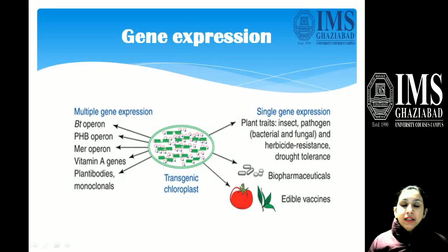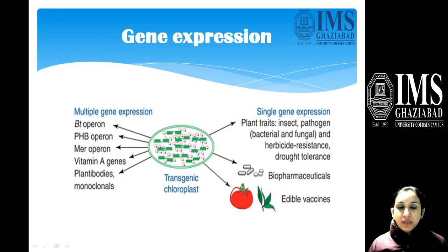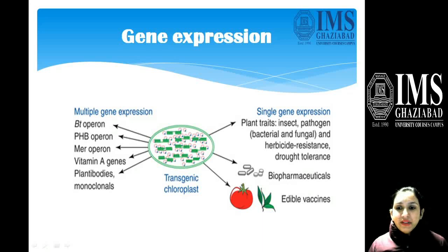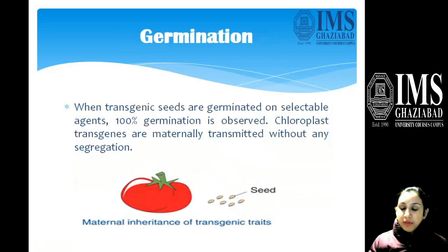After selection comes gene expression, which could be multiple gene expression or single gene expression. For multiple gene expressions, examples include the Bt operon, PHB operon, MUR operon, vitamin A genes, and plant bodies. For single gene expression, plant traits such as insect resistance, pathogen resistance, herbicide resistance, and drought resistance can be achieved.